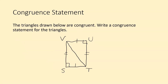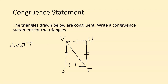Let's look at the next one — the triangles drawn below are congruent, write a congruent statement. We have two right triangles. I'll start with triangle VST. All that matters is that you follow the same pattern in the second triangle. The corresponding point for V is T, so we go from T to U to V. Therefore, triangle VST is congruent to triangle TUV.